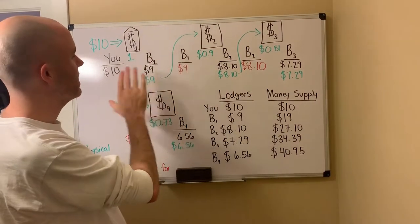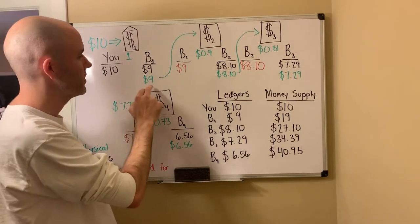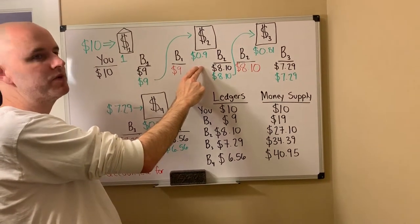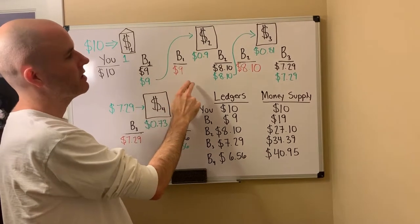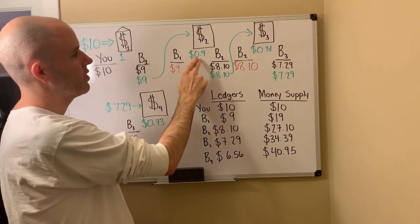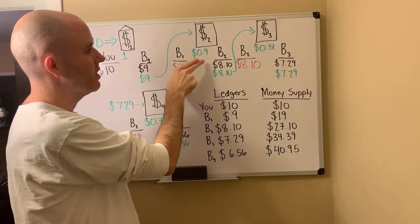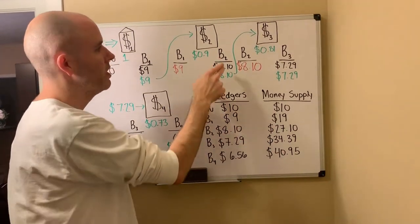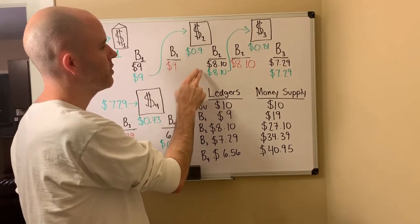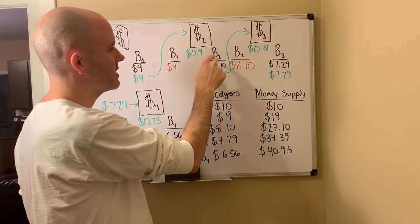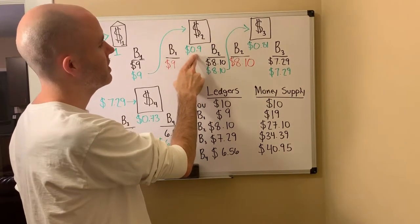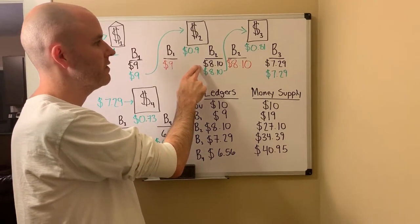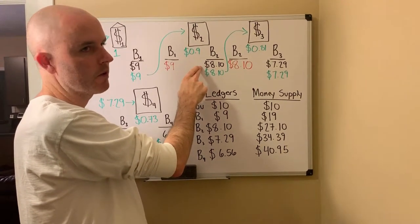The exact same thing that happened in the first scenario happens again. The $9 goes into bank number two. Bank number two is required to maintain 10% of what was deposited, so they are required to hold $0.90. Then borrower two comes into the fray — maybe he's a roofer who wants to start a roofing business. He borrows the excess, which in this case will be $8.10. That's the maximum the bank is able to lend based on the reserve ratio they're required to keep.